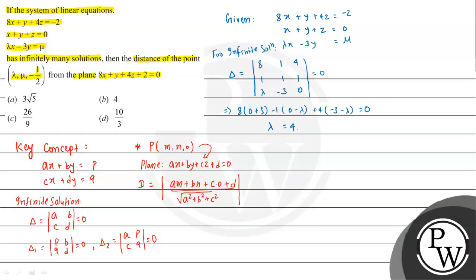To find mu, we use delta_1. Replace the first column: minus 2, 0, mu; 1, 1, minus 3; 4, 1, 0. For infinite solutions, this also equals zero.